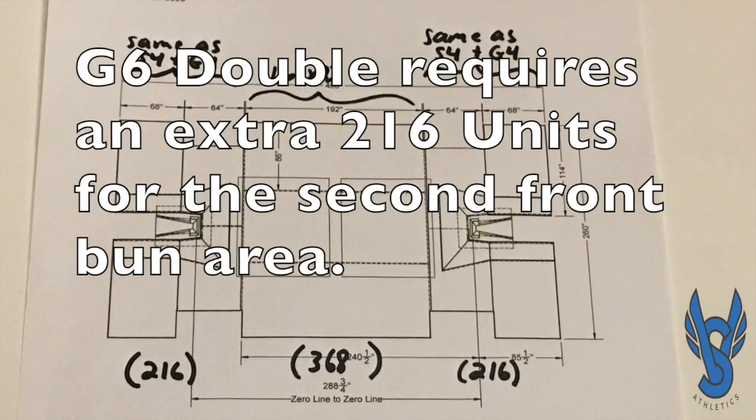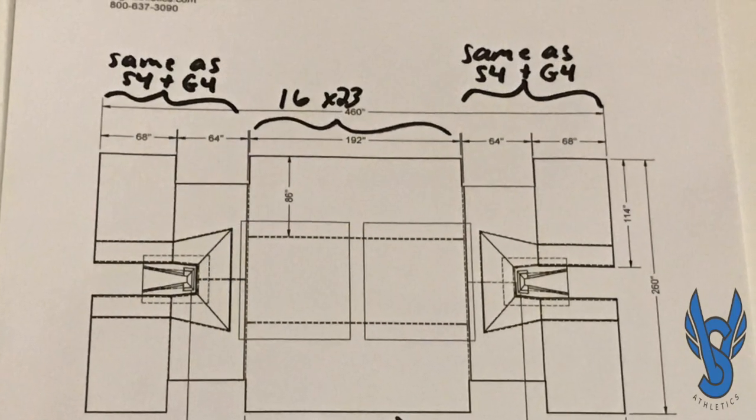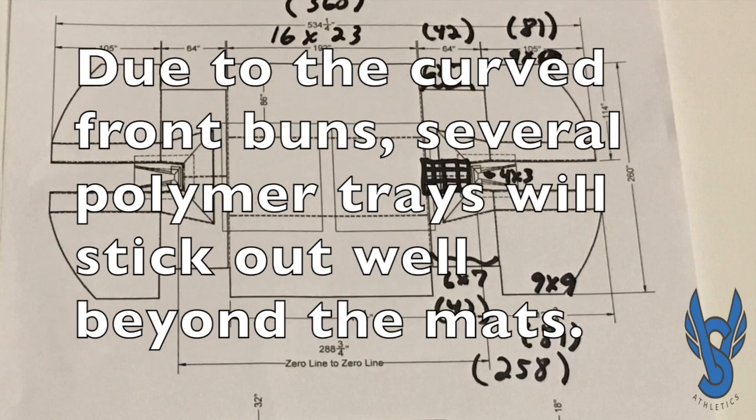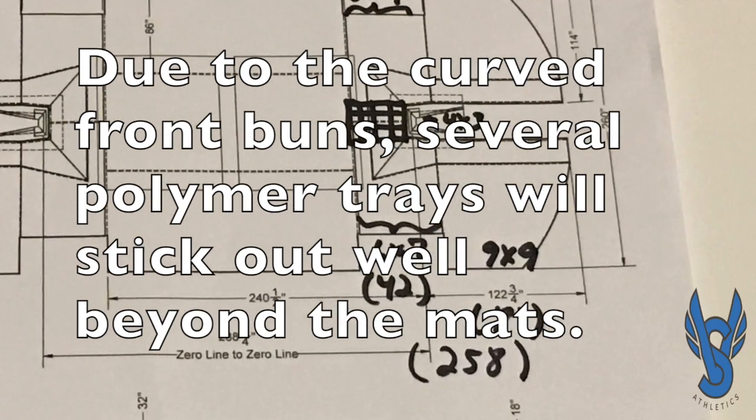Now having said all of that, let's take a look at each of the Gill landing systems and the recommended number of polymer tray units.